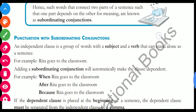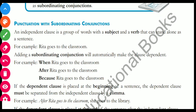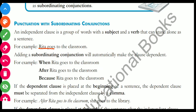Now, punctuation. An independent clause is a group of words with a subject and a verb, and they can stand alone as a sentence. For example, 'Vita goes to the classroom' — Vita is the subject and goes is the verb. Adding a subordinating conjunction will automatically make the clause dependent.